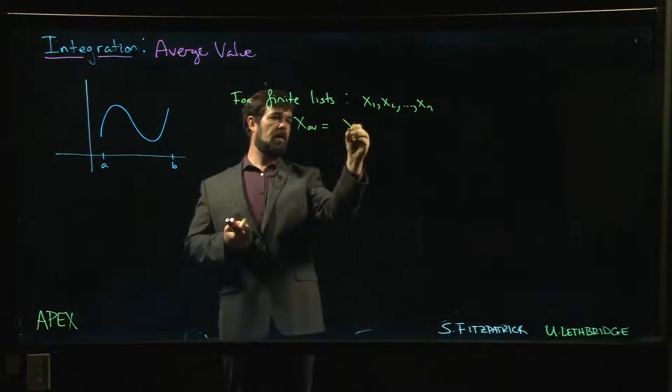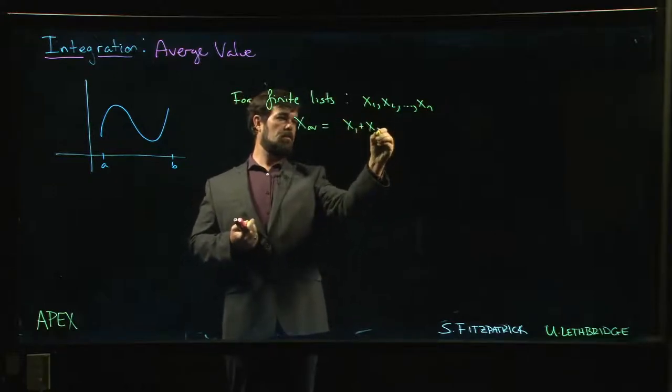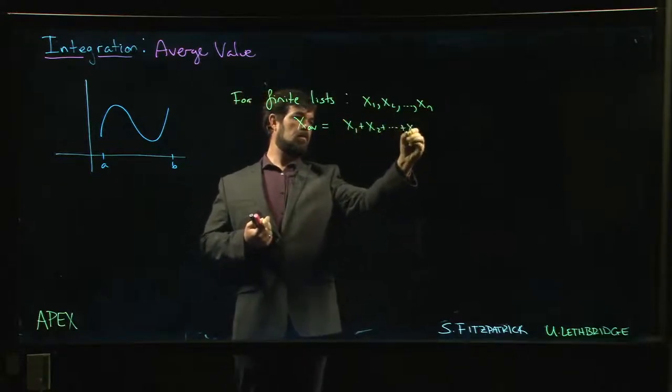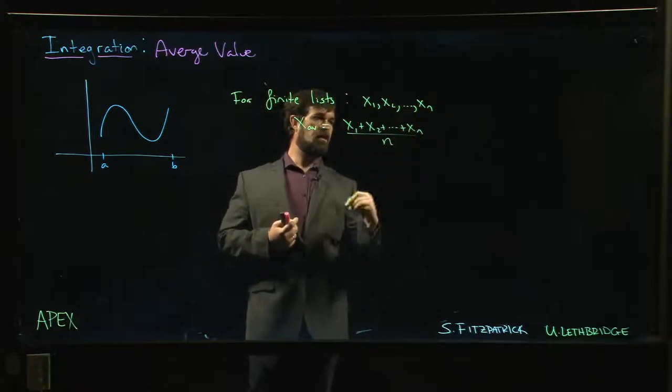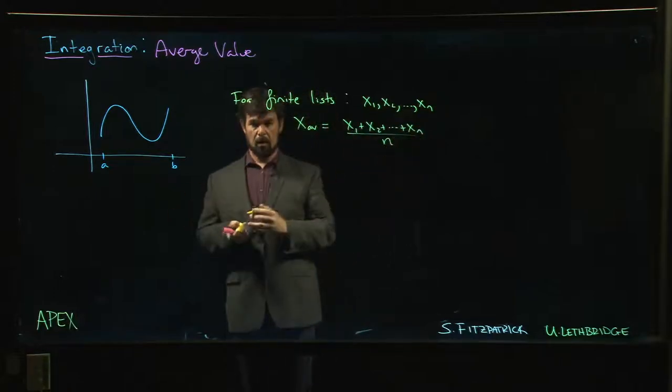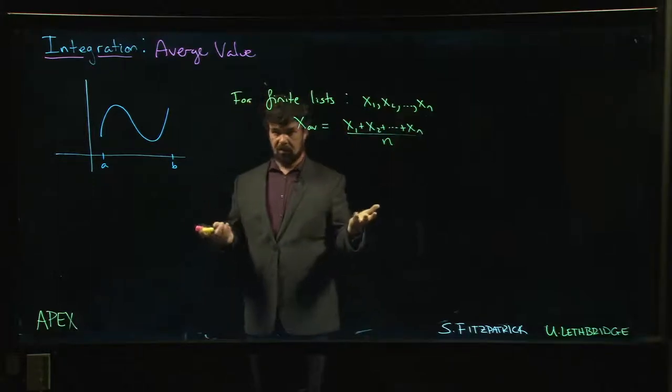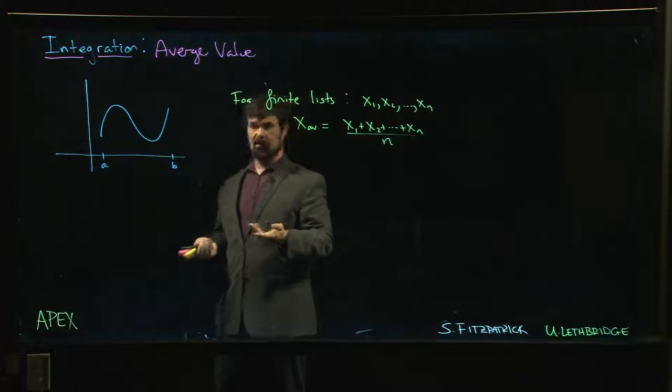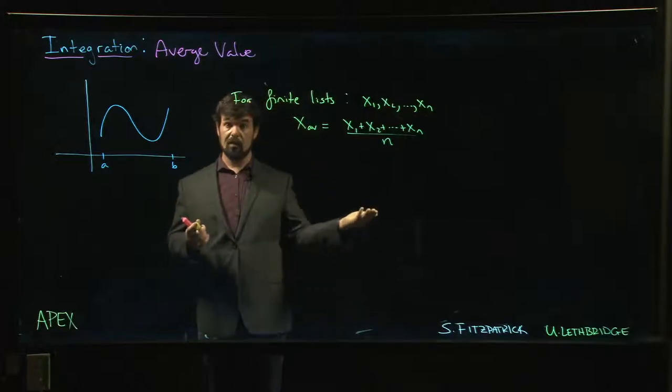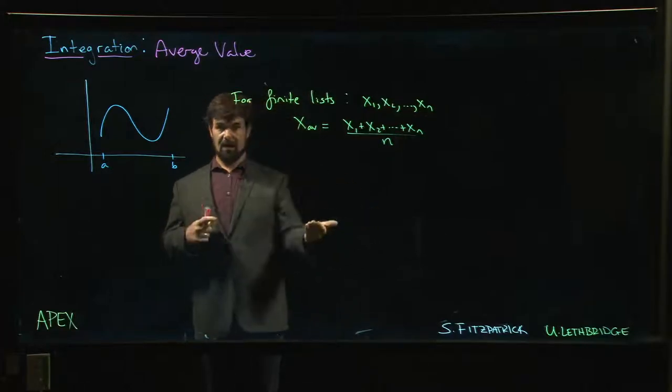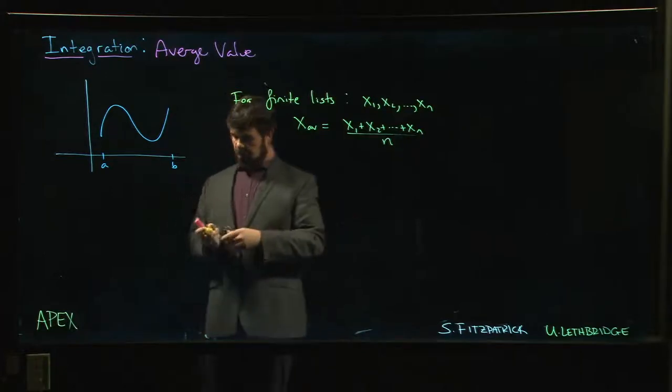The average value is just adding them all up and dividing by how many items there are on the list. Exactly how I would compute your average score on a test: add up all the test scores, divide by the number of students who wrote the test. That gives us the average.